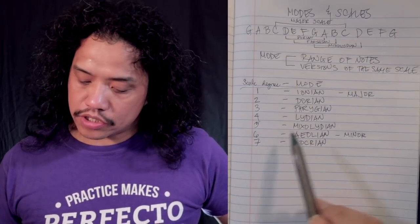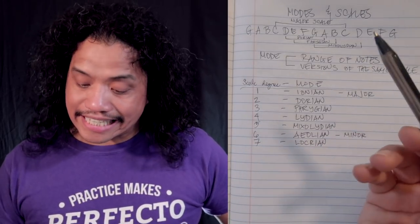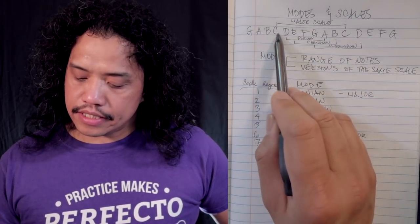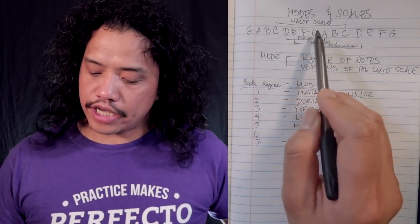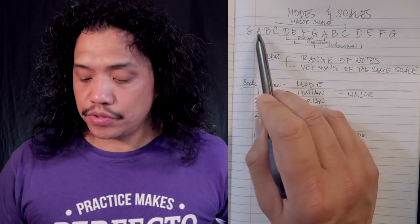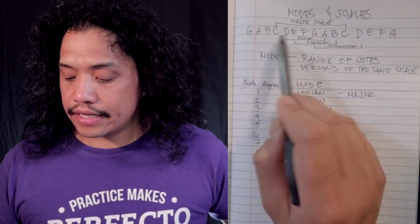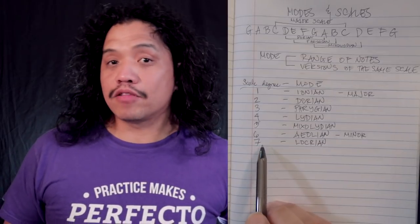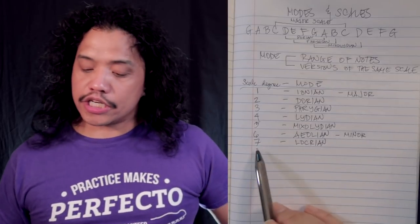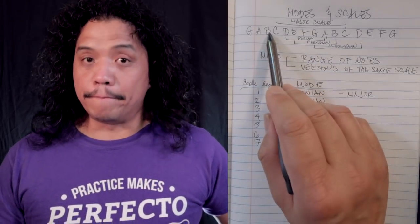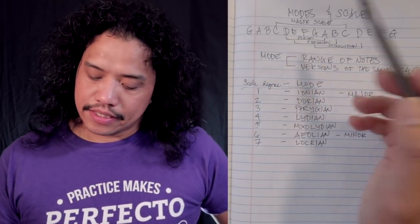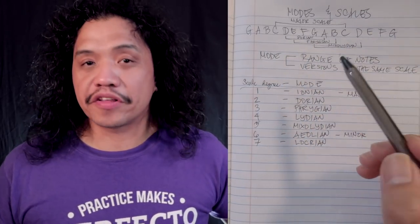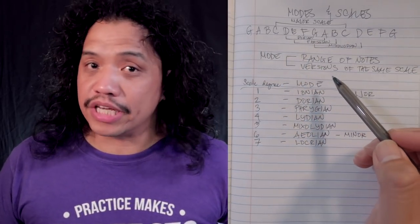Aeolian, the sixth mode, starts on the sixth degree, which is A. You go from A, B, C, D, E, F, G, A with A as your root — that is your A Aeolian mode. And finally we have Locrian, which starts on the seventh degree, B: B, C, D, E, F, G, A, B — those are the notes of B Locrian.